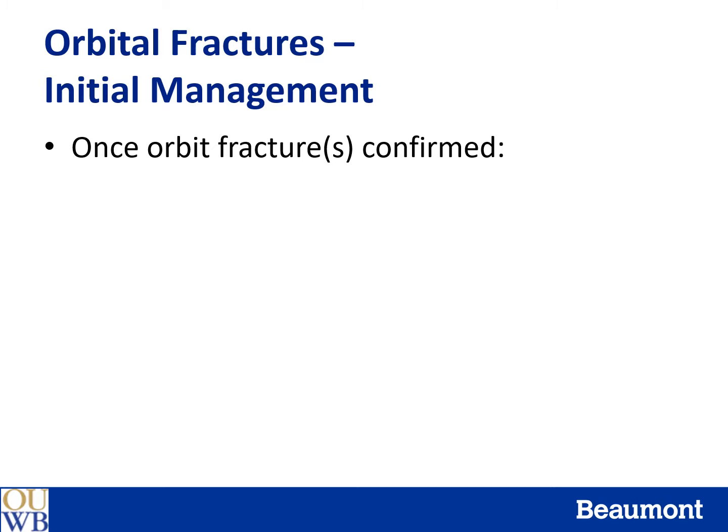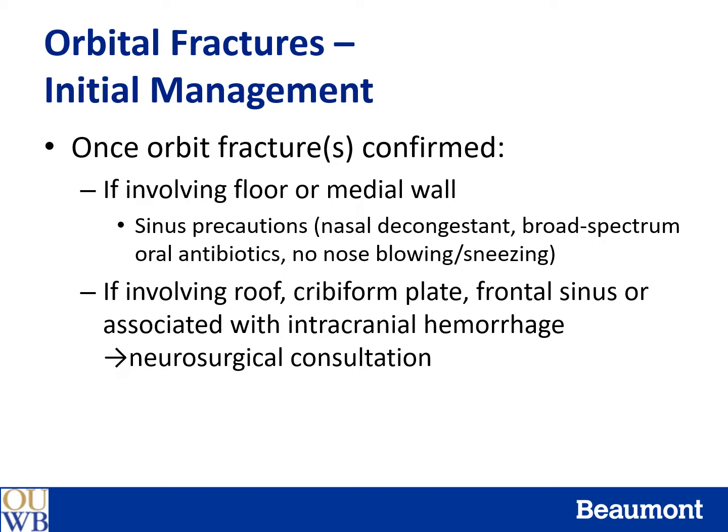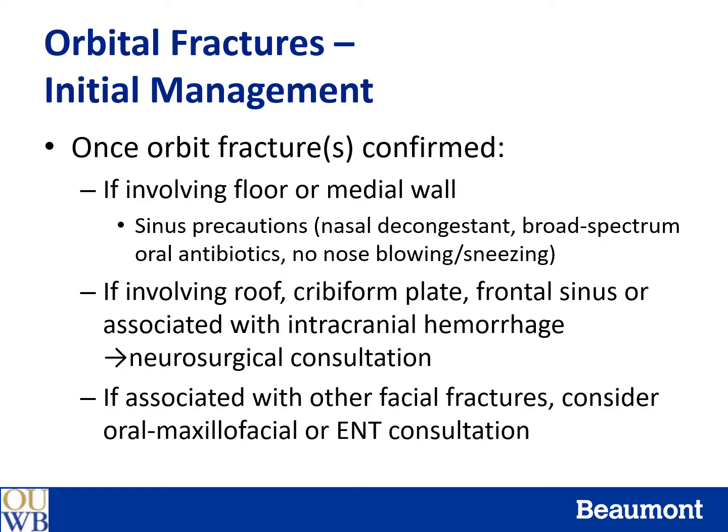Once an orbit fracture is identified, initial management depends on which walls are involved. If the fracture involves the floor or medial wall, which are adjacent to aerated sinuses, sinus precautions should be prescribed. These include use of nasal decongestant, broad-spectrum antibiotics, and avoidance of nose blowing or sneezing, as these can introduce air into the orbit and result in orbital emphysema. If the fracture involves the roof, cribriform plate, or frontal sinus with associated intracranial injury, a neurosurgical consultation should be obtained. If the orbit fracture is associated with other facial fractures such as maxillary sinus, nasal bone, or CMC fracture, consider consultation with oral maxillofacial surgeons or ENT specialists.